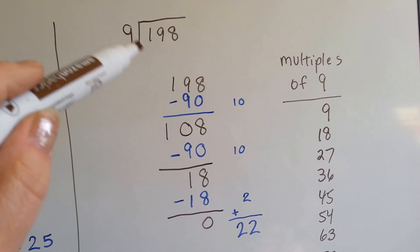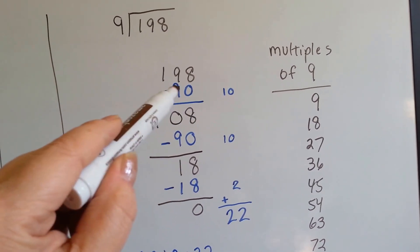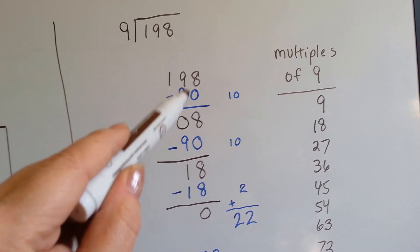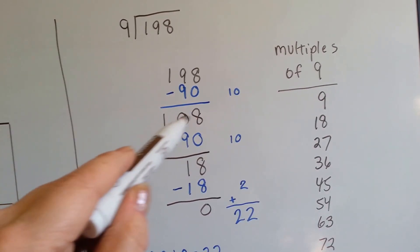9 times 10 is 90. If we take that away, we end up with an 8, a 0, a 1, a 108.